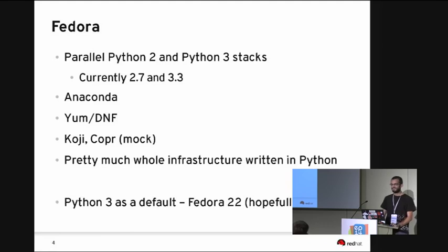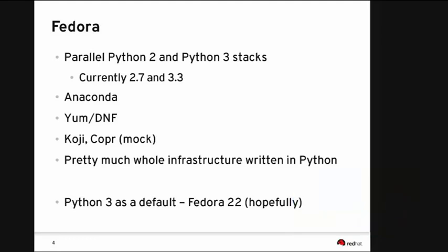I'm proud that I'm a Pythonist and that I can say my distribution can't live without Python — it's so important. One of our plans is to make Python 3 the default. I honestly think that Python 3 is better as a language, but we can keep that to a corridor discussion. Hopefully we'll be switching to Python 3 as a default in Fedora 22.